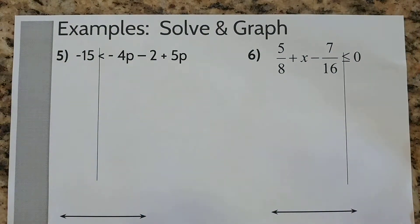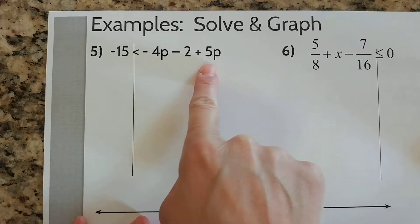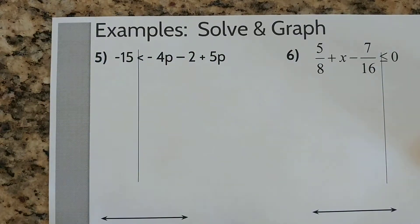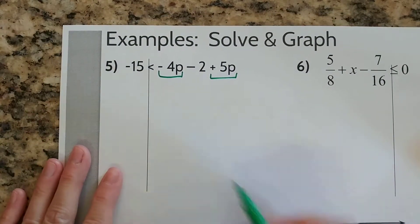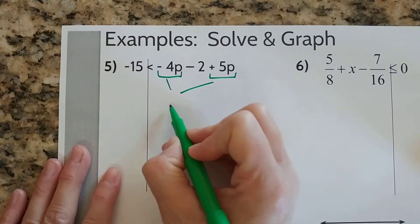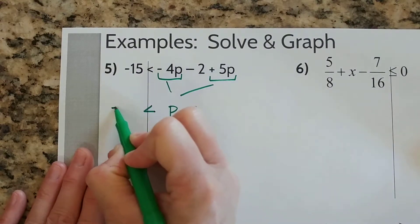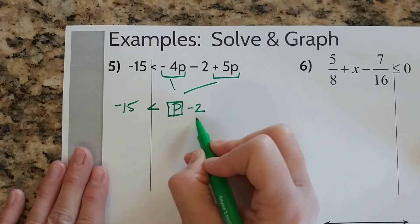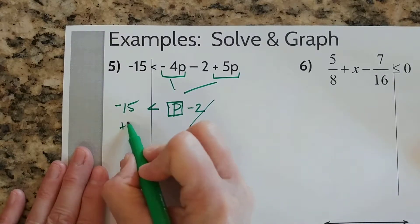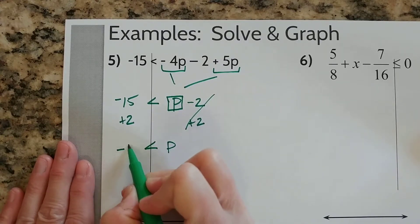Now we're ready for number 5. On your notes that on the left side it says multi-step inequalities, so we're going to try a couple of multi-step inequalities that are pretty simple. On this one, let's see what we can do to simplify this side. We have a negative 4p and a positive 5p and we want to combine those together. We know that negative 4 plus 5 is just 1 — I don't need to put the 1 in front of the p, the p is just fine by itself. Then bring down the minus 2 after it. Bring down the inequality symbol and the negative 15. The goal is to isolate the p, so I have to undo minus 2 with the opposite, adding 2 to both sides. Bring down the inequality symbol and negative 15 plus 2.